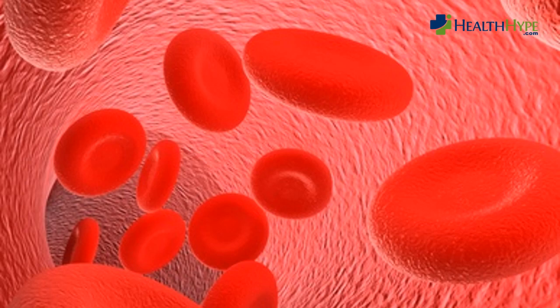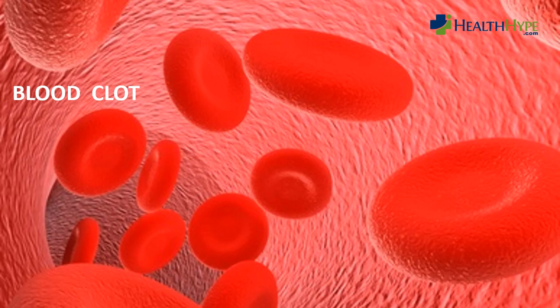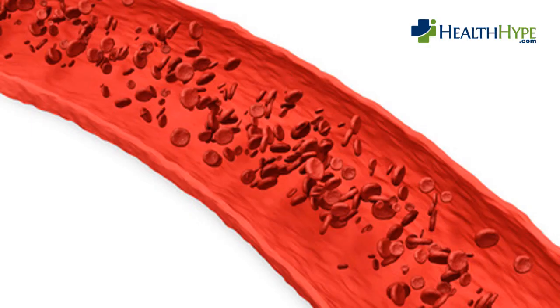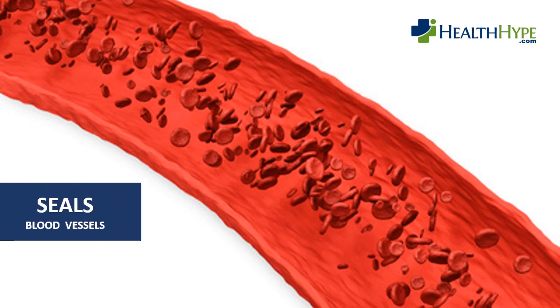Sometimes the components of blood may aggregate to form a clot. This blood clot has important purposes but can sometimes be dangerous. When there is a break in a blood vessel, these components of blood plug the tear — this plug is the blood clot. Eventually the body will repair the break in the blood vessel and the clot is removed.